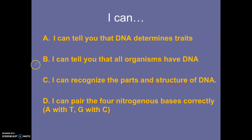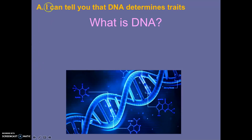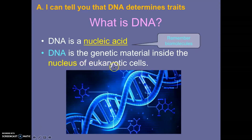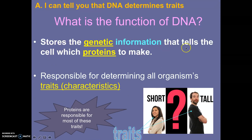The first one is: what is DNA? DNA is a nucleic acid. If you remember when we talked about biomolecules, one of the four biomolecules is nucleic acids, and DNA is a nucleic acid. The function is to be the genetic material inside the nucleus of eukaryotic cells. Keep in mind that eukaryotes have a nucleus, and that is where the DNA is going to be found. But prokaryotes do not have a nucleus, but they do have DNA as well. Its function is to store the genetic information that tells the cell which proteins to make, and it is responsible for determining all organisms' traits. Another word for traits is characteristics.